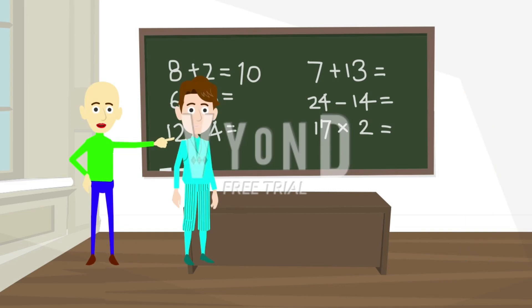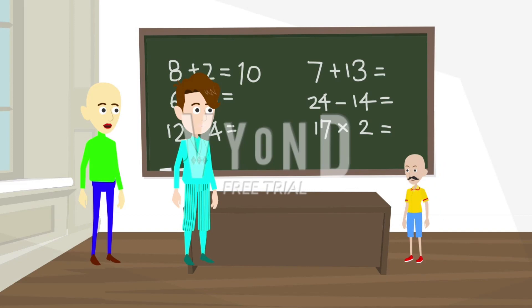So the first person I will choose is you over there with the yellow shirt and moustache. Come here please. So, what is 1 plus 1? Two. Correct.